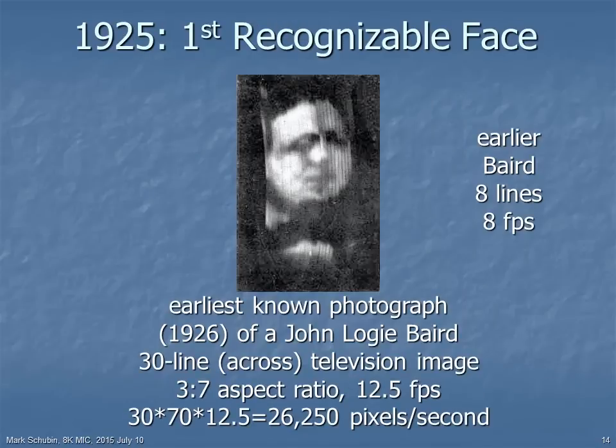Despite many advances, the first video image of a recognizable human face was not achieved until 40 years later in 1925 in London. The inventor, John Logie Baird, chose 30 scanning lines at 12.5 frames per second. This is a very early image you're seeing here. He very quickly got to much better images without changing the resolution.